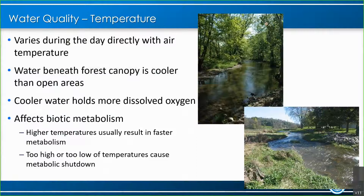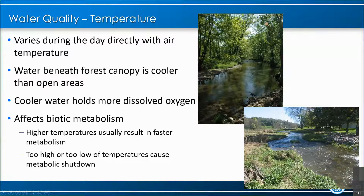The water chemistry part — first up is temperature. This varies during the day directly with air temperature, but it's also affected by vegetation near the streams. Water beneath a forest canopy where it's shaded is going to be cooler than in open areas. Here you can see most of the stream is shaded, so it will have pretty cool water temperatures. But in a stream like this one — open on one side — as the sun moves throughout the day the stream gets a lot more sunlight and will have warmer stream temperatures. Cooler water actually holds more dissolved oxygen, which is really important.